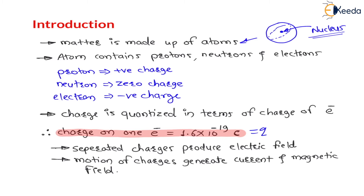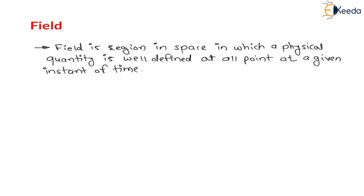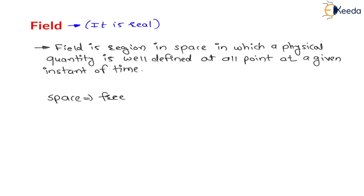First of all, we have to define what a field is. Now, field is always real. Many times students think that field is imaginary — no, it is real. Field is a real quantity. Now, whenever we talk about space: space is free from all types of fields. This is called space.